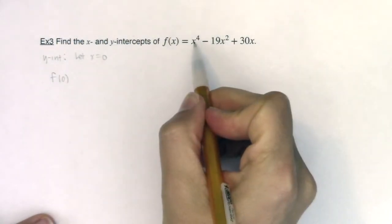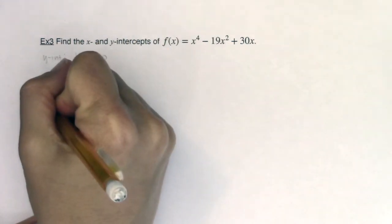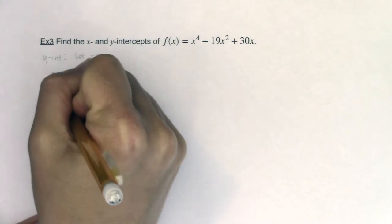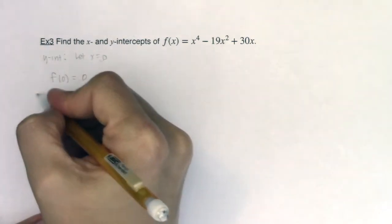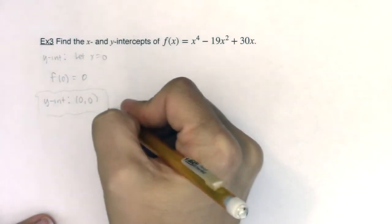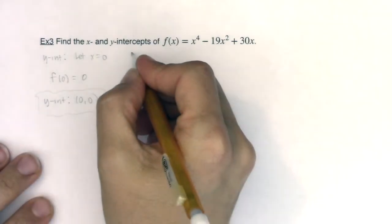If I plug 0 in, this term zeros out, zeros out, zeros out, so I get 0 back out. So that tells me the y-intercept is the ordered pair (0, 0). Alright, so remember anytime you give me an intercept, it's a point on a graph, so I need the x and y-coordinate.